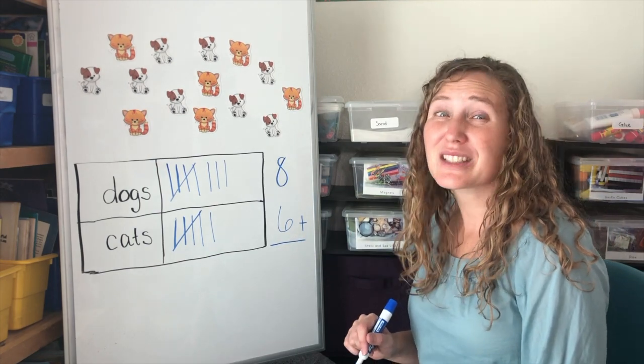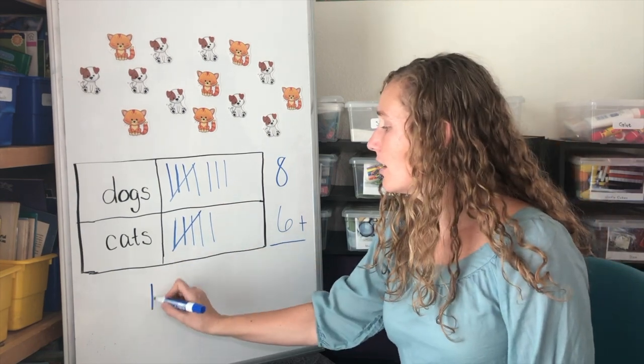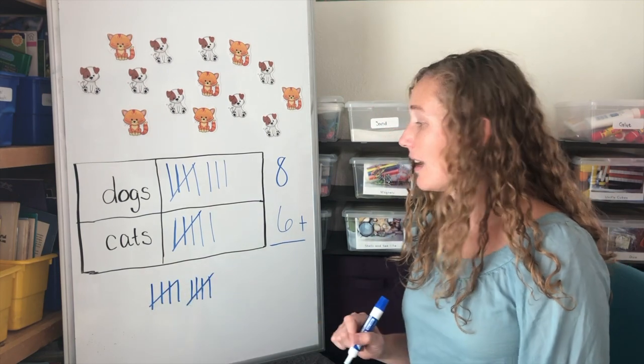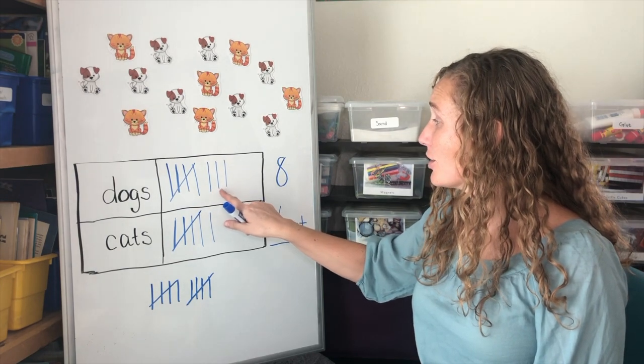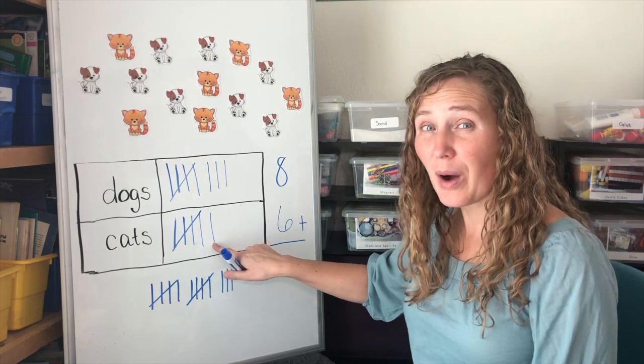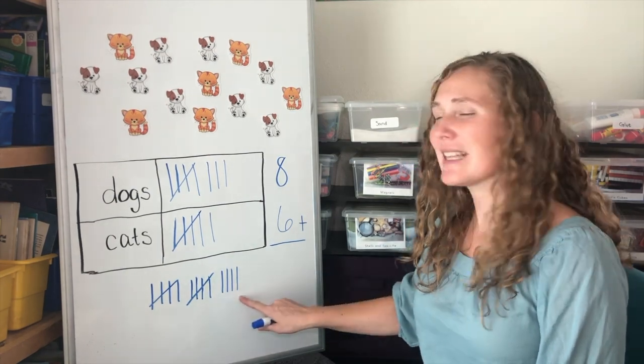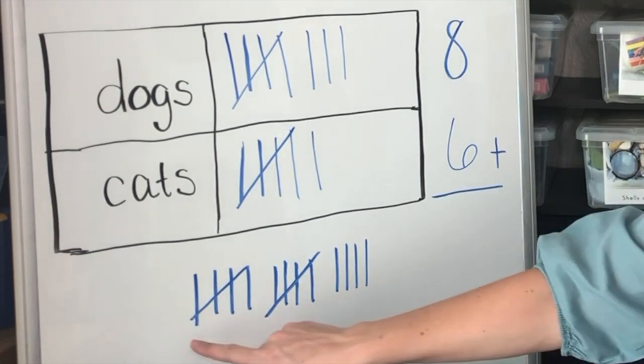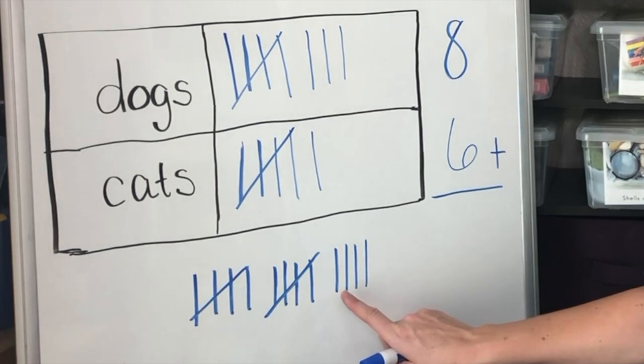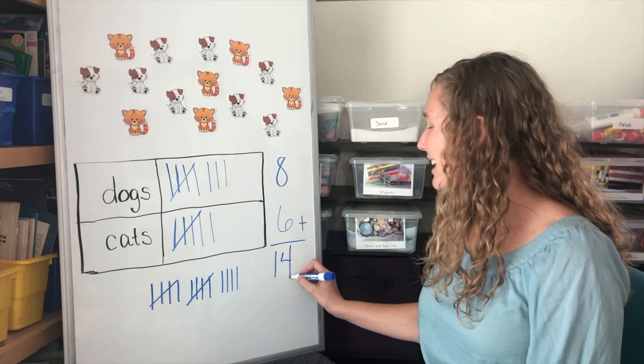Let's use tally to help us. We have two groups of five tallies. Then we have one, two, three tallies by themselves up here. And one tally by itself down here. So all together, how many tally marks do we have? Five, ten, eleven, twelve, thirteen, fourteen. We have fourteen pets.